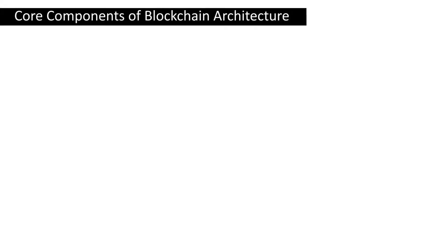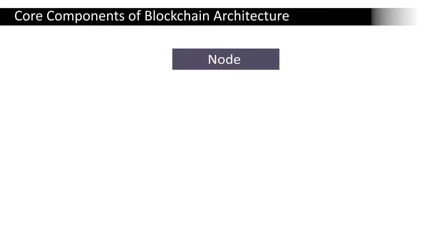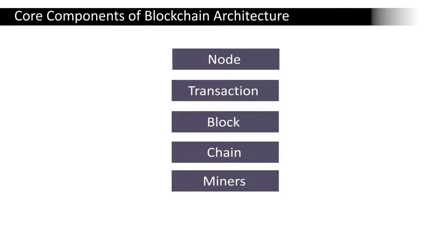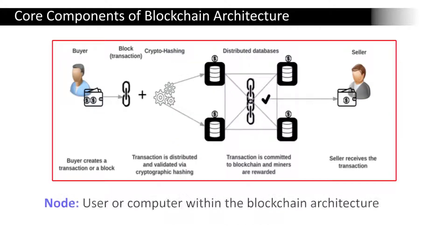We will now see the core components of blockchain architecture and its working. The core components are: node, transaction, block, chain, miners, and consensus. A node is a user or computer within the blockchain architecture, each having an independent copy of the whole blockchain ledger.